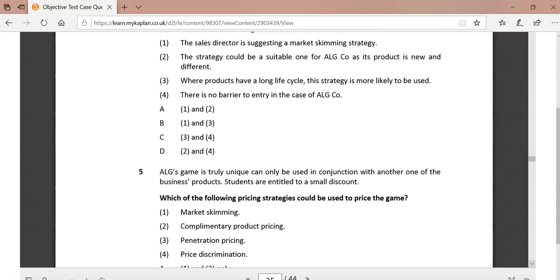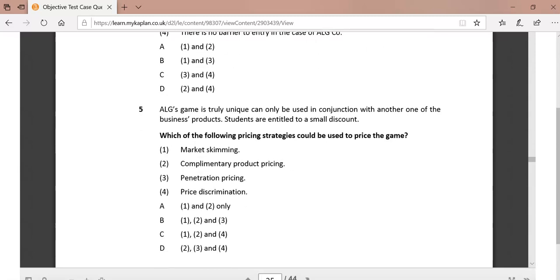It says that ALG's game is truly unique and can only be used in conjunction with another business product, and students are entitled to a small discount. The discount for students is price discrimination. Unique is market skimming, and in conjunction is complementary product pricing. So one, two, and four takes us to C. See you in question 250.